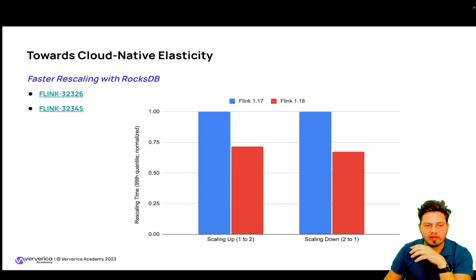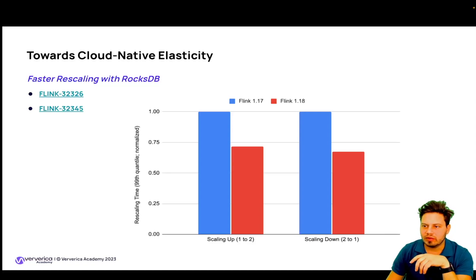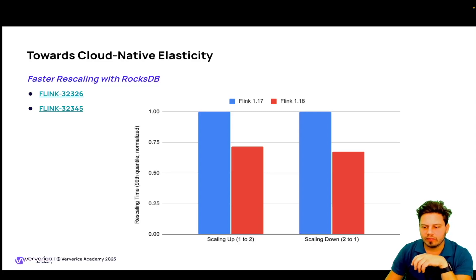We also have faster rescaling of RocksDB. The rescaling times when using the RocksDB backend with incremental checkpoints have been improved by about 30%. It can now download state handles in parallel and download individual files in parallel. Furthermore, the write-ahead log was deactivated for bulk-inserting into the temporary RocksDB instance used for rescaling.